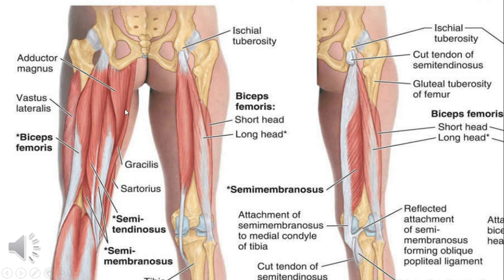The hamstrings cross two joints — the hip joint and the knee joint — so they act on both. If the thigh is fixed, they are flexors of the knee joint; if the knee is fixed, as in standing, they are extensors of the hip joint; if both are fixed, they can extend the trunk. On walking on a smooth plane, hamstrings are the active muscles responsible for extension, while on an inclined plane or climbing stairs, gluteus maximus is the main extensor.